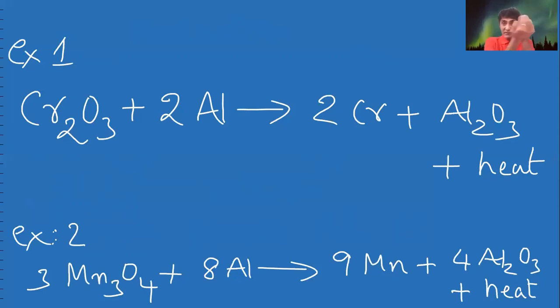In the same manner, Mn3O4 changes into manganese. In all the cases, aluminum is reducing agent.